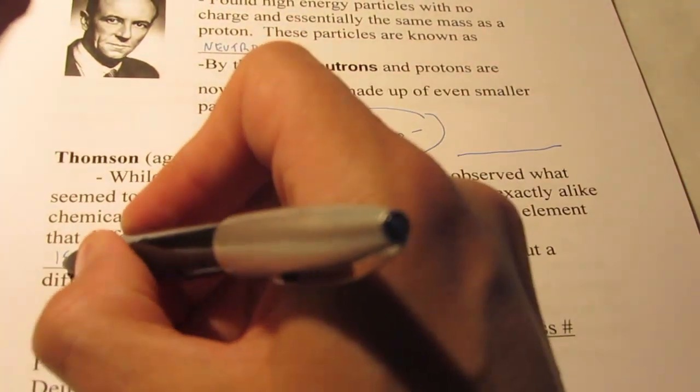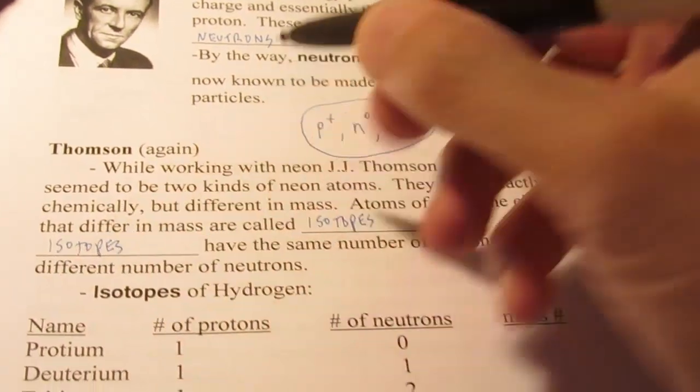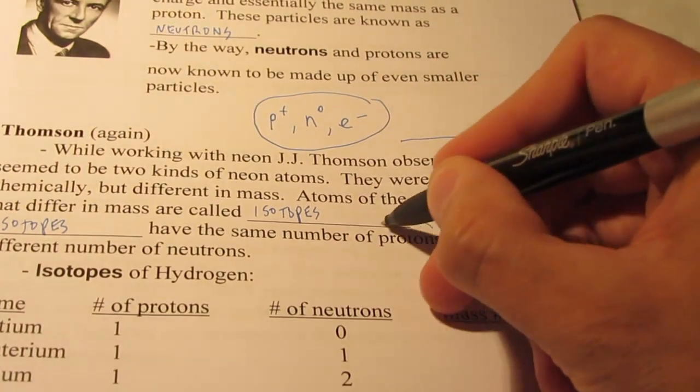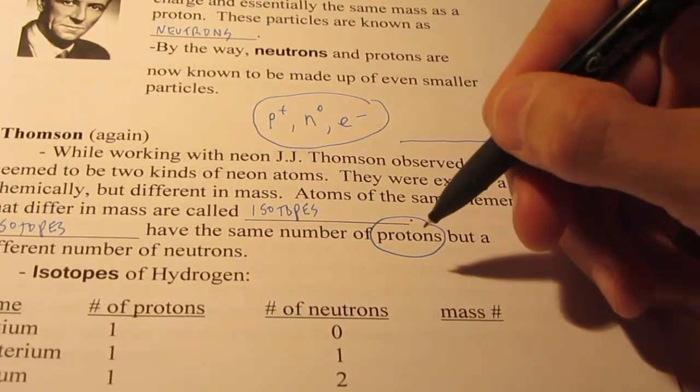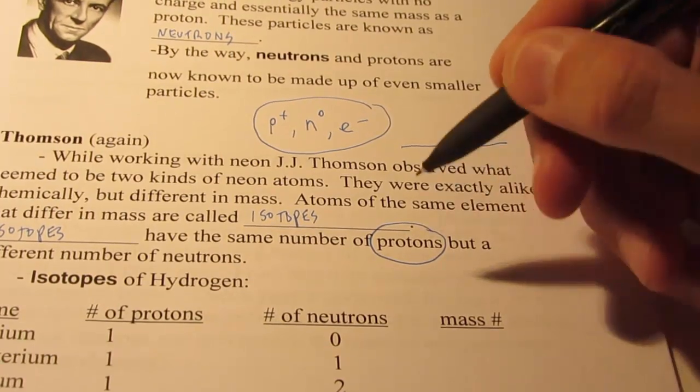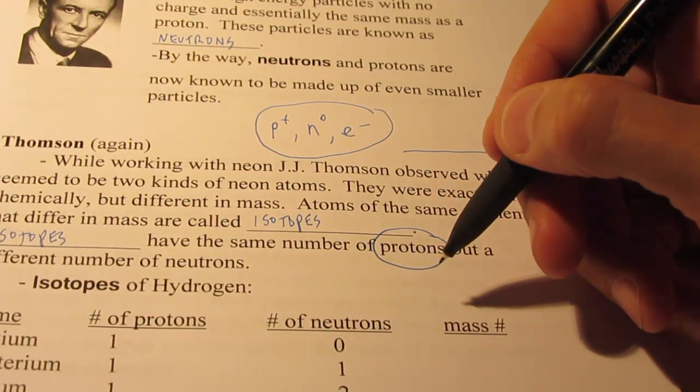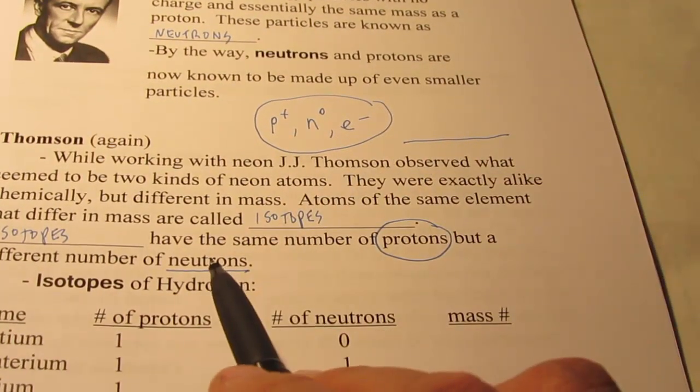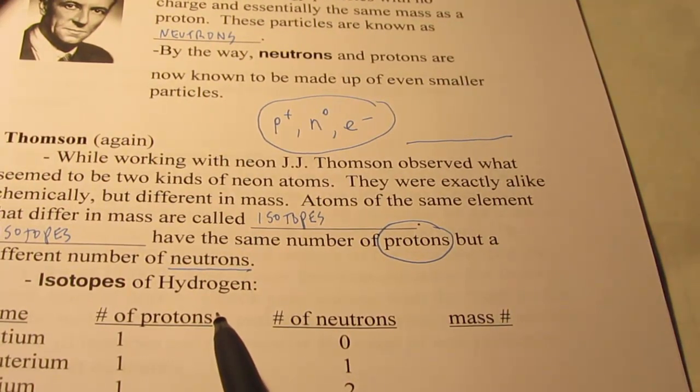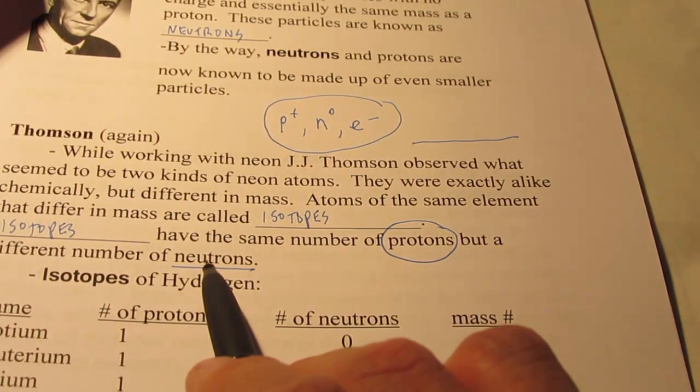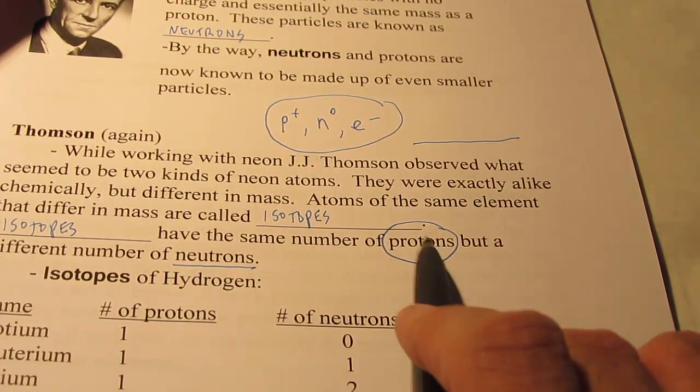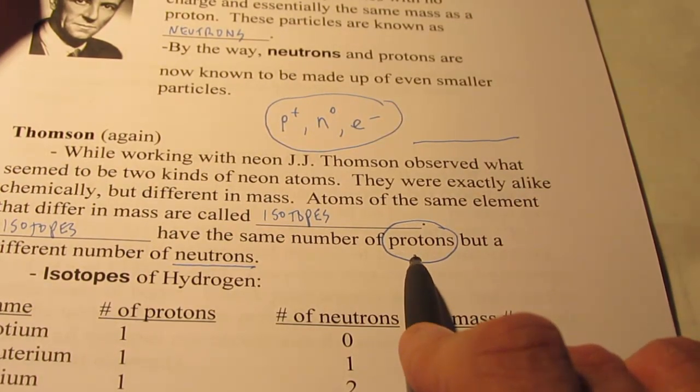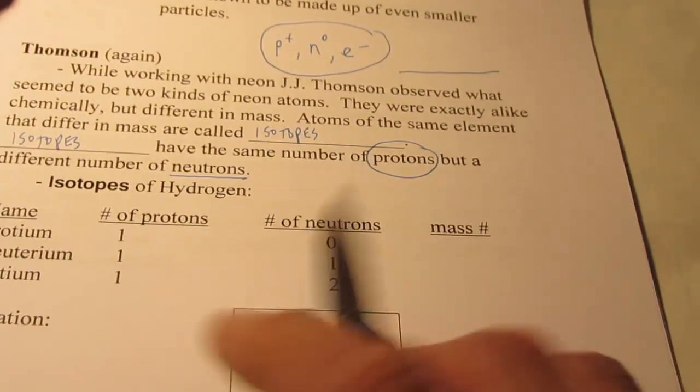Isotopes have the same number of protons but a different number of neutrons. It's the protons that characterize an atom. So long as an atom has one proton, it will always be a hydrogen atom. However, the number of neutrons can vary. Since neutrons and protons have virtually identical masses, if I have different numbers of neutrons but the same number of protons, the mass might change, but the element itself does not change.